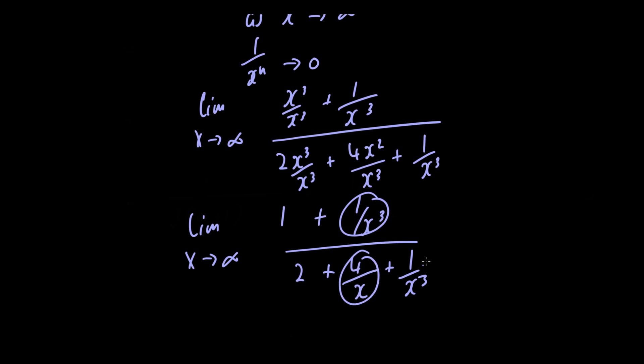Now if we just let x tend to infinity, this term here and this term and this term all tend to zero. So we're just left with 1 over 2, and that's the final answer to this problem. Thank you very much for watching. I hope you have a great day.